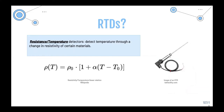RTDs are resistive temperature detectors. As you can see here, they are a wire of metal — usually copper — coated with an insulative material. What they do is use the linear relation between resistivity and temperature. Resistivity can be defined as the ability of a material to oppose resistance to the flow of current. By knowing how much resistance a material applies, we can deduce the temperature at which the RTD is operating through this linear relation.